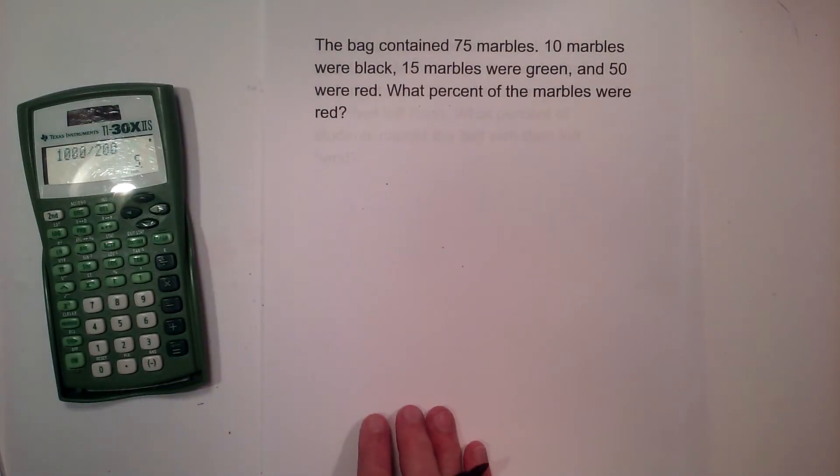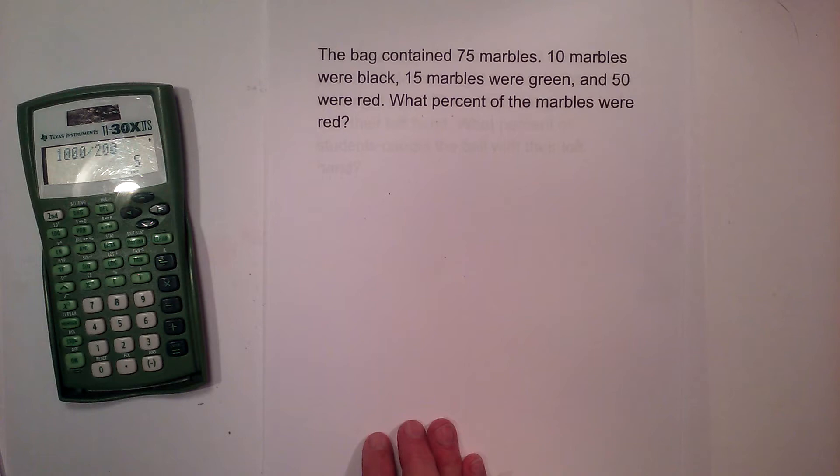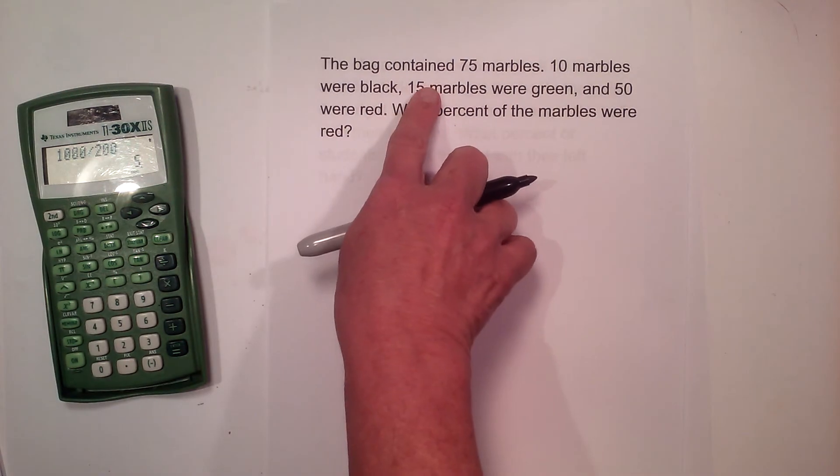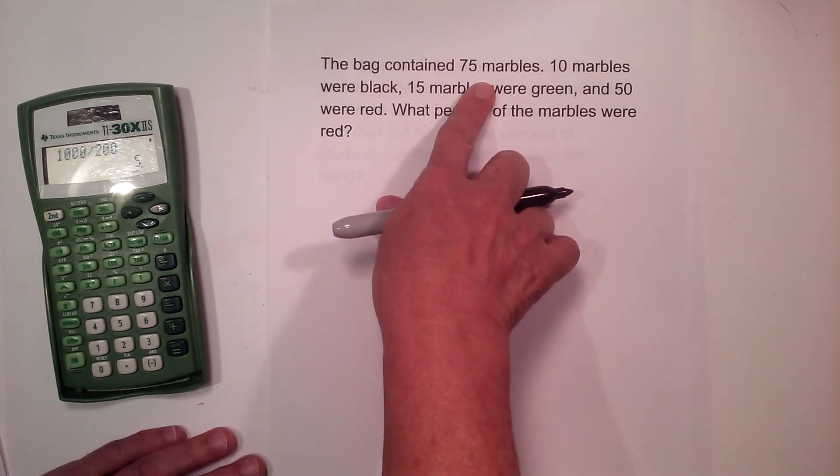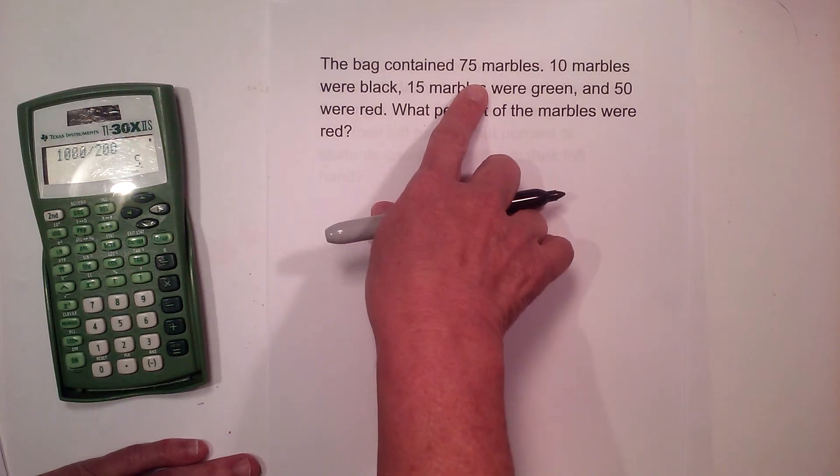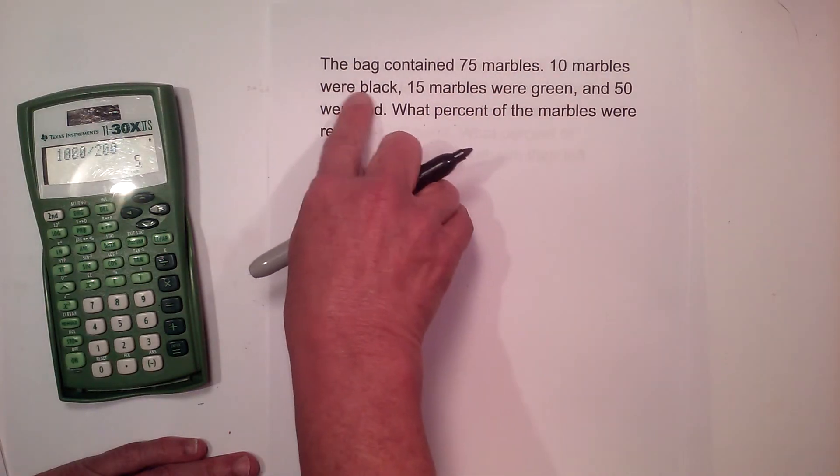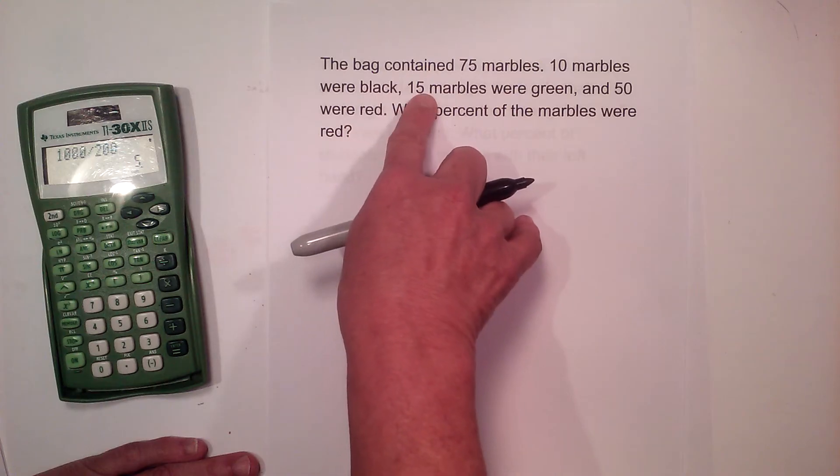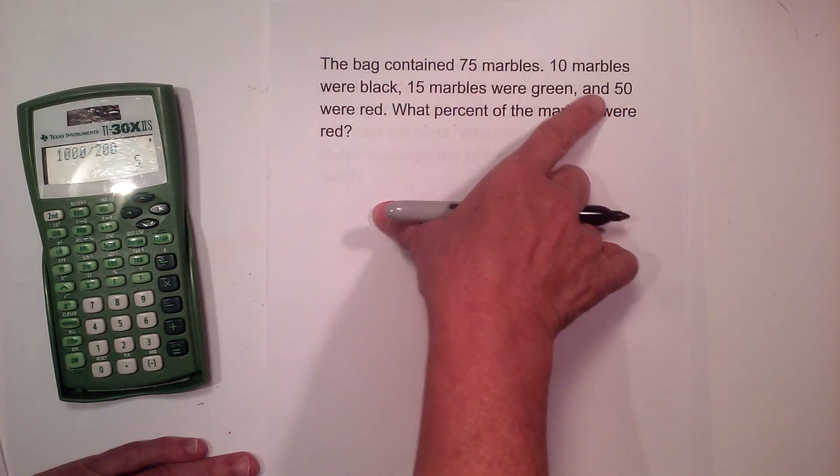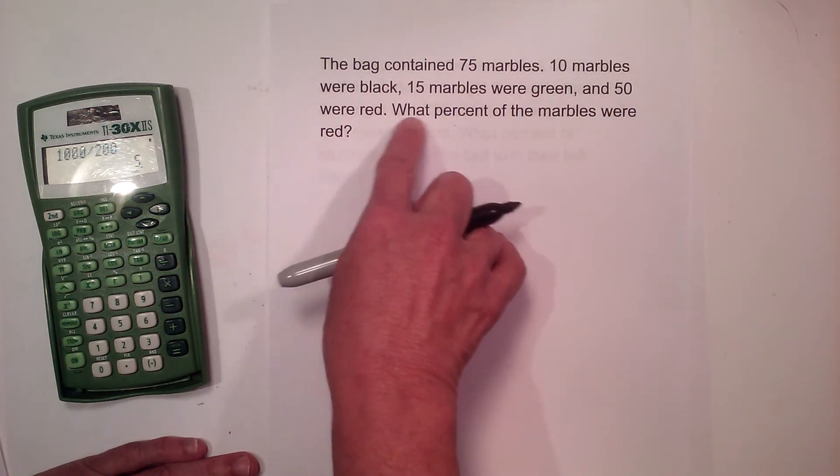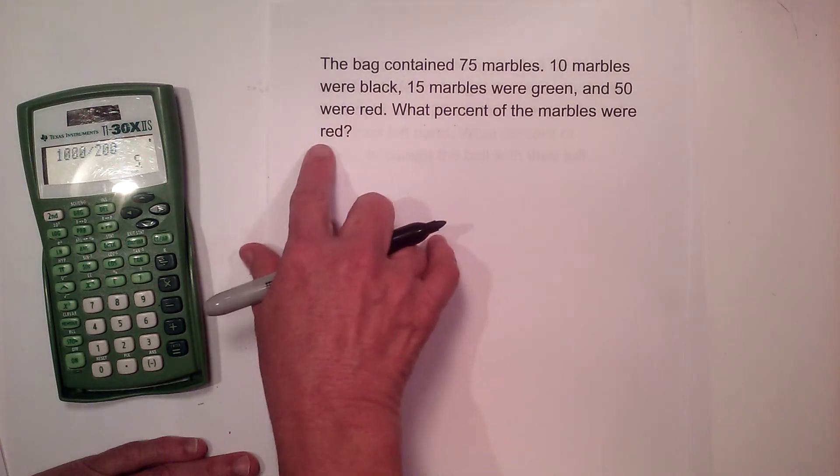So there's our first one. Let's look at the second one. The bag contains 75 marbles, so I can already identify what my total is going to be or what the whole is going to be. I have 75 marbles so that's my whole. 10 marbles are black, 15 are green, and 50 are red. What percent of the marbles are red?